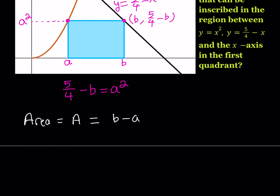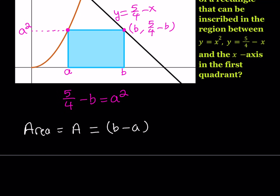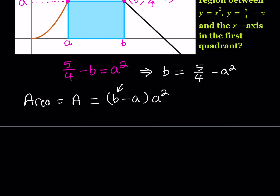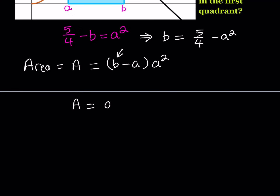What's the base? The base is b minus a for this rectangle. And you can write the height in two ways — either a squared or 5 fourths minus b. Since I'm going to use a as my main variable and write everything in terms of a, I'll stick with the height as a squared. Now let's write this area in terms of a only, because with optimization problems you always want a single variable so you can easily differentiate. From the relation 5 fourths minus b equals a squared, I isolate b: b equals 5 fourths minus a squared.